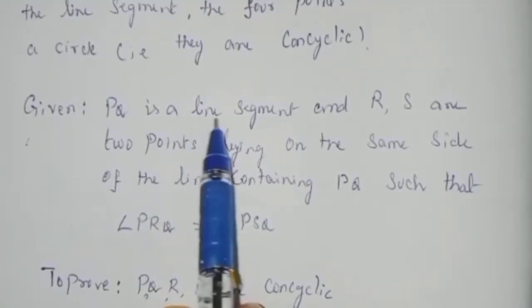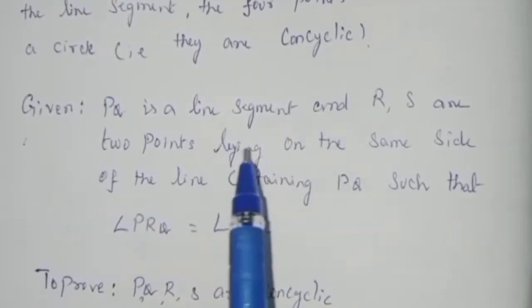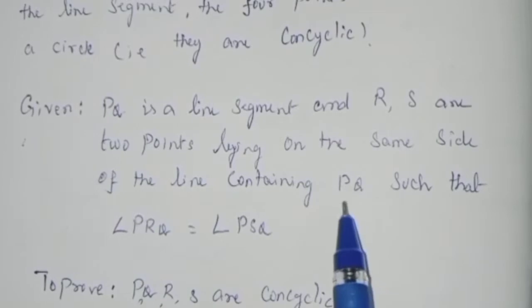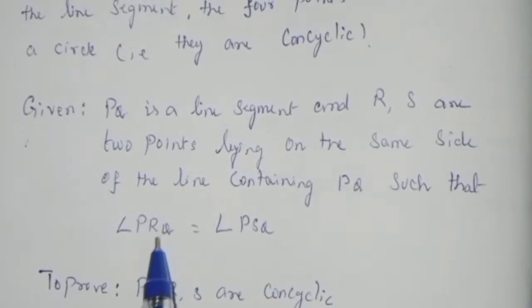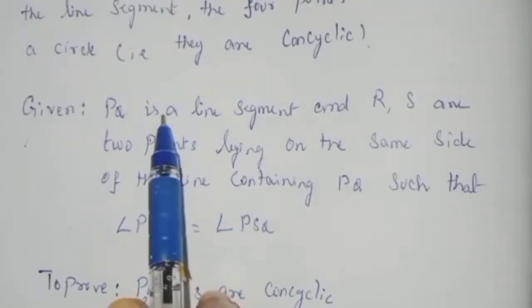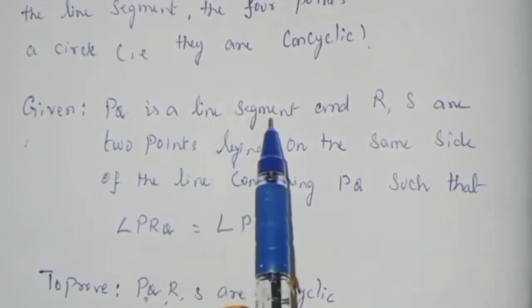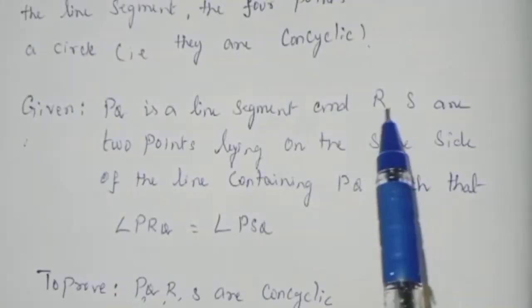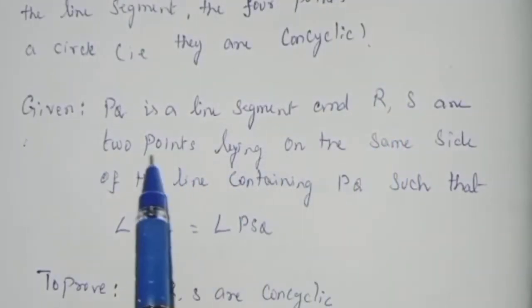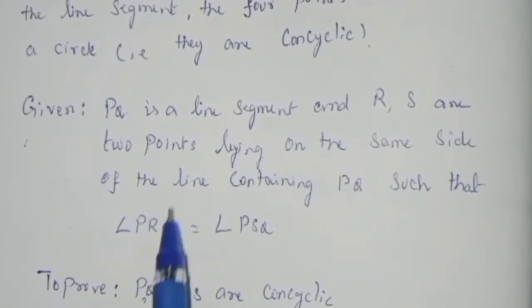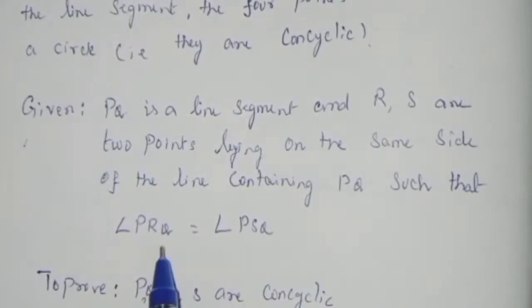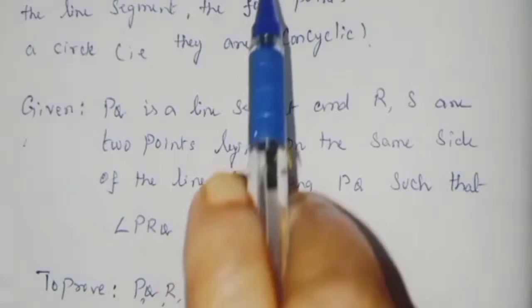Given: PQ is a line segment and R, S are 2 points lying on the same side of the line containing PQ, such that angle PRQ is equal to angle PSQ. This is the given.